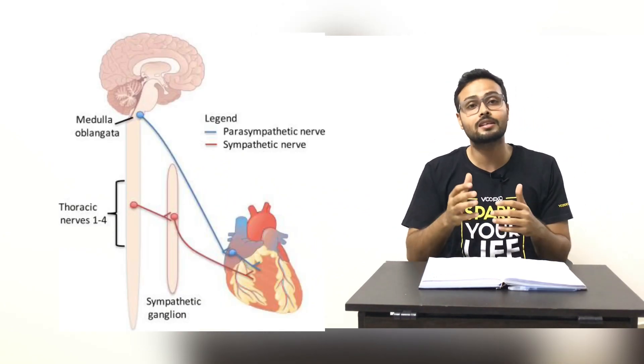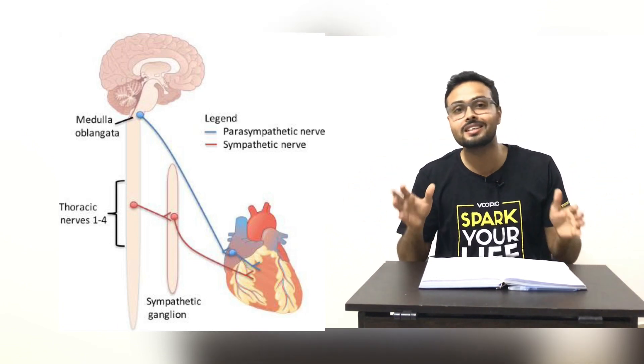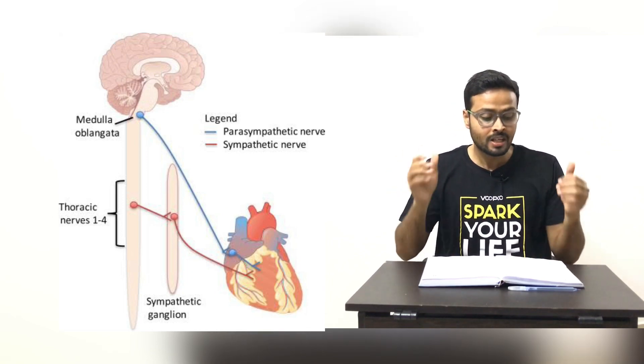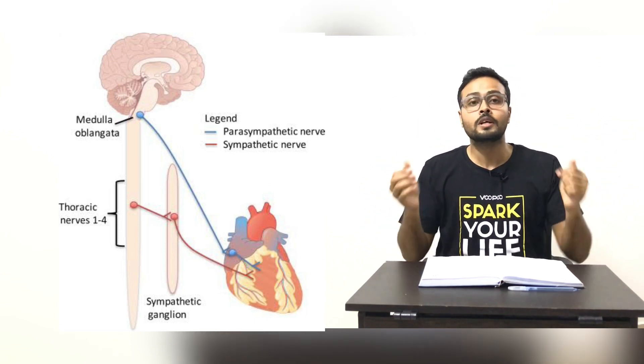Heart transplant is a rare condition done to overcome severe heart disease and increase the patient's lifespan. Before discussing the answer, we need to understand what happens physiologically after a heart transplant. During the procedure, all nerve supply to the heart is cut off, resulting in total denervation of the heart. Because of this denervation, even at rest the patient will have a slightly elevated heart rate of around 100 to 110 beats per minute, which is a normal response post-transplant.